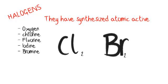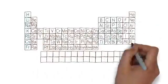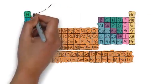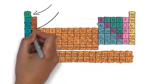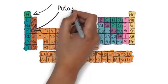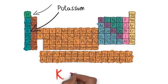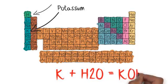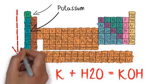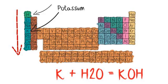The group 1 elements are known as the alkali metals because when they react to water they form an alkali. For example, take potassium: potassium plus water will give us potassium hydroxide and hydrogen. As you go down the group, the reaction of water gets more and more vigorous.